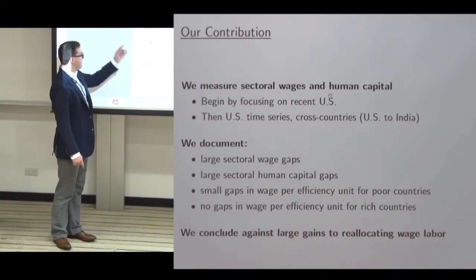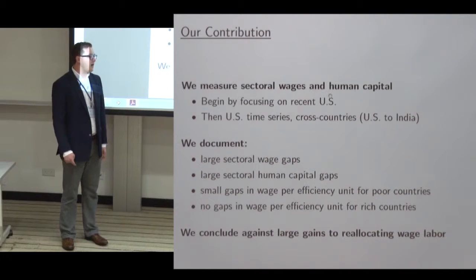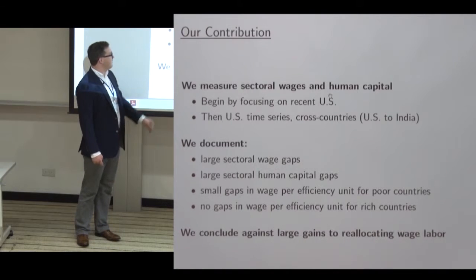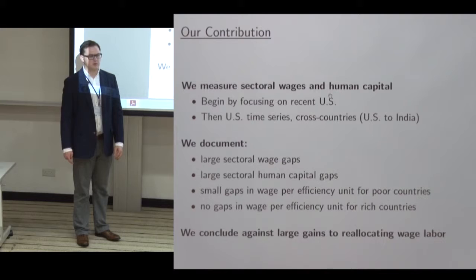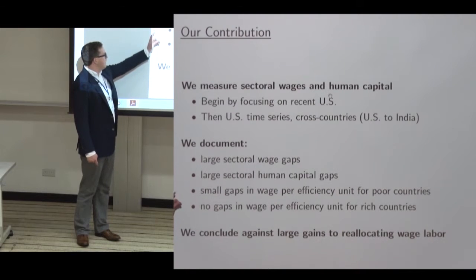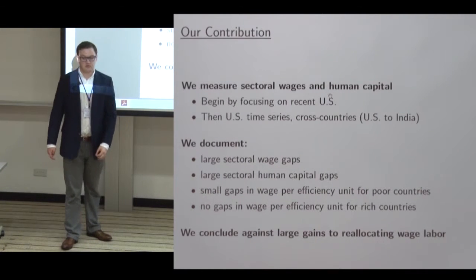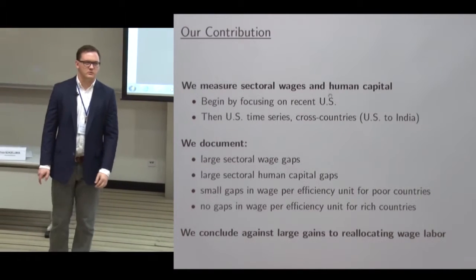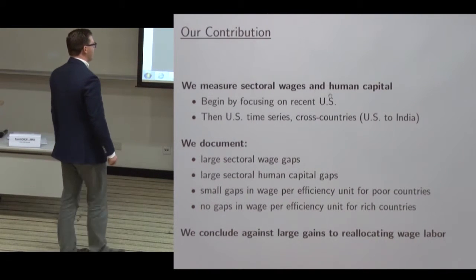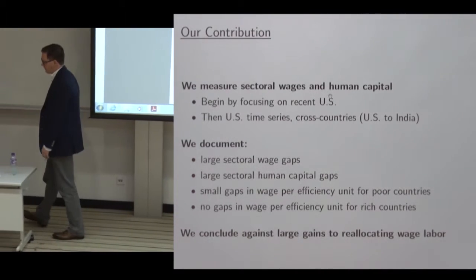The basic facts we're going to document are these: if you take raw wage gaps across sectors, they can be large — not as large as you'd find measuring labor productivity, but still sizable. Once you measure correctly, we find large human capital gaps between sectors. But once you divide the wage gaps by human capital gaps, we find small gaps in wage per efficiency unit in poor countries and basically no gaps in rich countries. The wage per efficiency unit is our name for the price that allocates labor, and in general there are not large gains to reallocating wage labor.